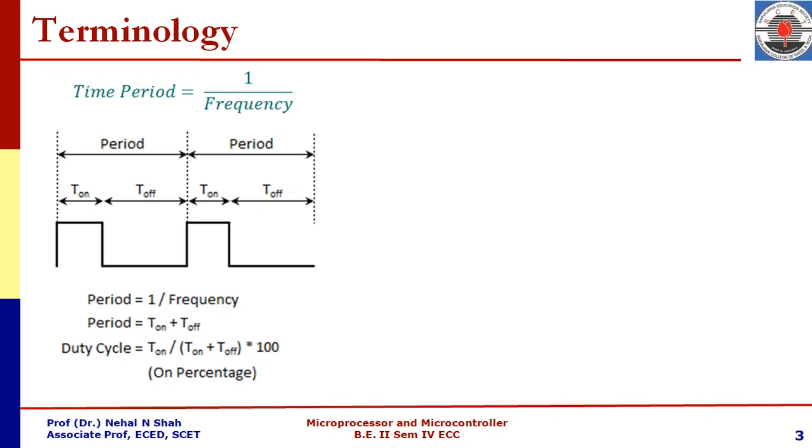If frequency of oscillation is given, we can identify time period for one cycle. If time period is given, we can identify frequency of oscillation. Even from duty cycle we can identify how much time will be on time and how much time will be off time.